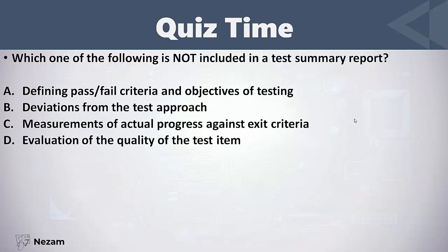Which of the following is not included in the test summary report? As we said, the test summary report is written at the end of a test activity. Defining pass/fail criteria and objectives of testing is not included in the test summary report, because these are defined in the test plan at the beginning of the project, not at the end.